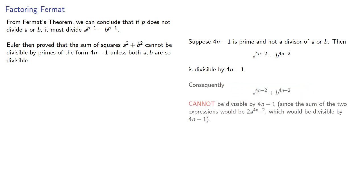Consequently, the sum cannot be divisible by 4n minus 1, since if we add the two expressions, we'd get 2a to the 4n minus 2, which would have to be divisible by 4n minus 1. Now, since 4n minus 2 is 2 times 2n minus 1, and 2n minus 1 is odd, then we can factor.